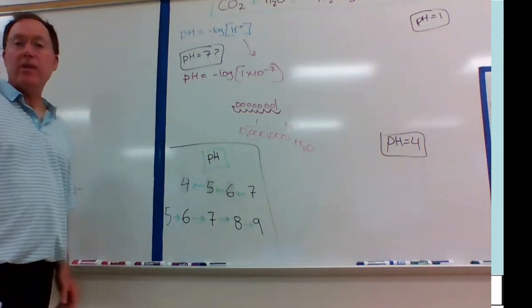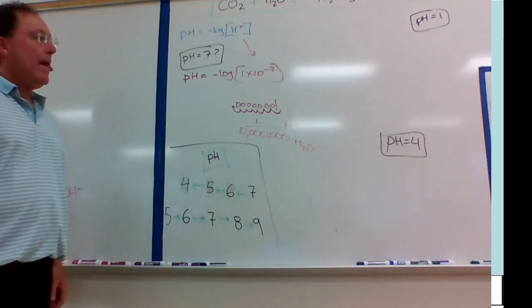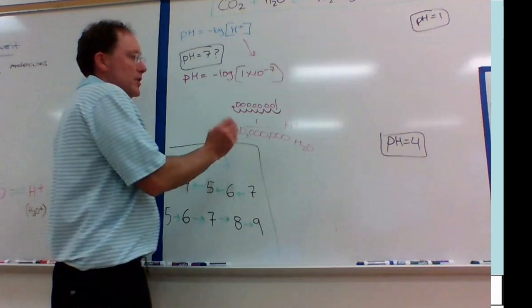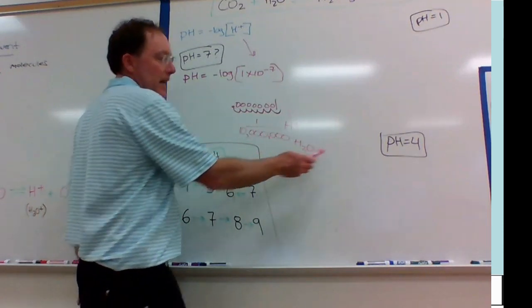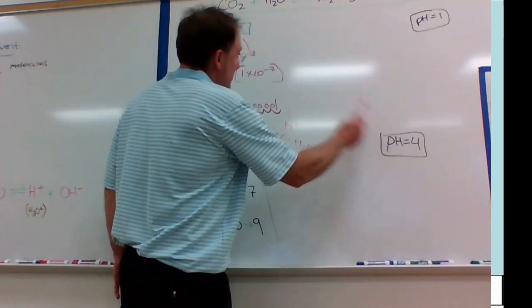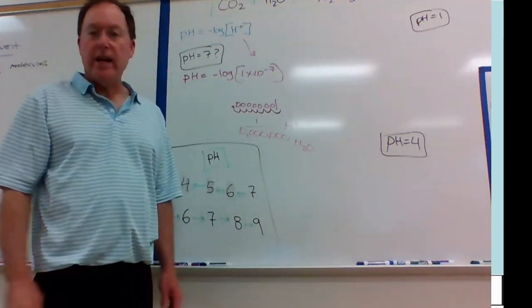So what this is saying here is that for every 10 million water molecules, you have 1 hydrogen ion. That's what that's saying. That's water. And that's fine. That's what we're mostly made of.